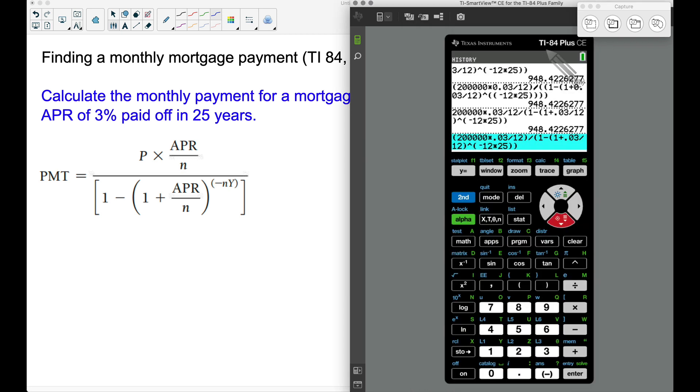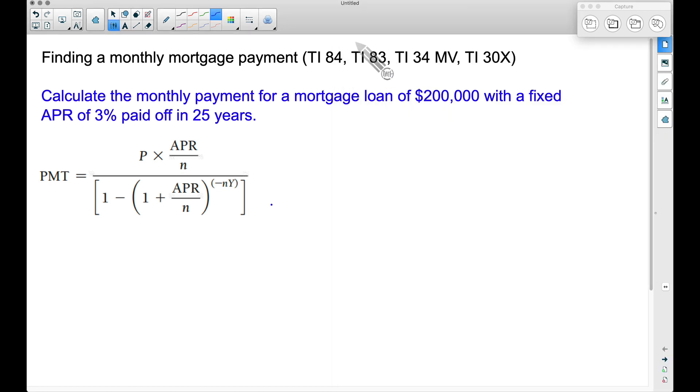We will look at the TI-84 plus first because that's probably the most popular calculator, the most commonly used. I'll also show you the classic approach using the TI-83. Let's calculate the monthly payment for a mortgage loan of $200,000 with a fixed APR of 3% paid off in 25 years.